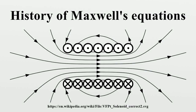In electromagnetism, one of the fundamental fields of physics, the introduction of Maxwell's equations was one of the most important aggregations of empirical facts in the history of physics. It took place in the 19th century, starting from basic experimental observations, and leading to the formulations of numerous mathematical equations, notably by Charles-Augustin de Coulomb, Hans Christian Ørsted, Carl Friedrich Gauss, Jean-Baptiste Biot, Felix Savart, André-Marie Ampère, and Michael Faraday.